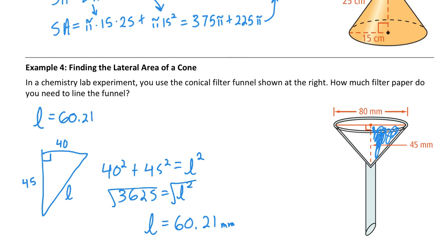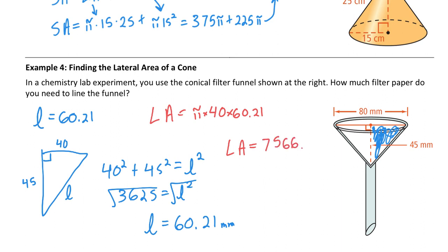The lateral area is pi times the radius (40) times the slant height (60.21). This is a real-life example so we need a real measurement: 60.21 × π × 40 equals approximately 7566.21 square millimeters. I didn't add the base area because this funnel or filter is open at the top, so only the lateral area is needed.